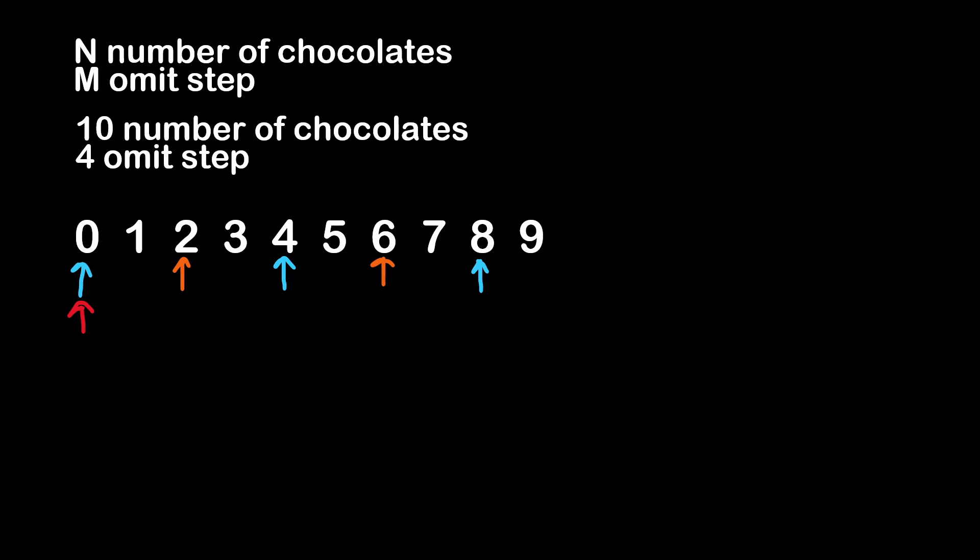Although the complexity of such a solution is not really dramatic, what is required by Codility is something even more performant and efficient. The most efficient solution relies on mathematical concepts using the least common multiple between the number of chocolates and the size of the step.